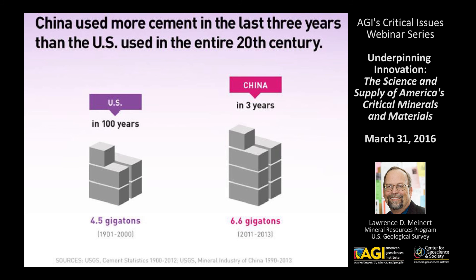Another way of thinking about this is in terms of the total amount of resources used by modern civilization. This is a rather startling infographic illustrating that China in the last three years has used more cement than the United States did in the previous 100 years — including building the entire U.S. interstate freeway system.